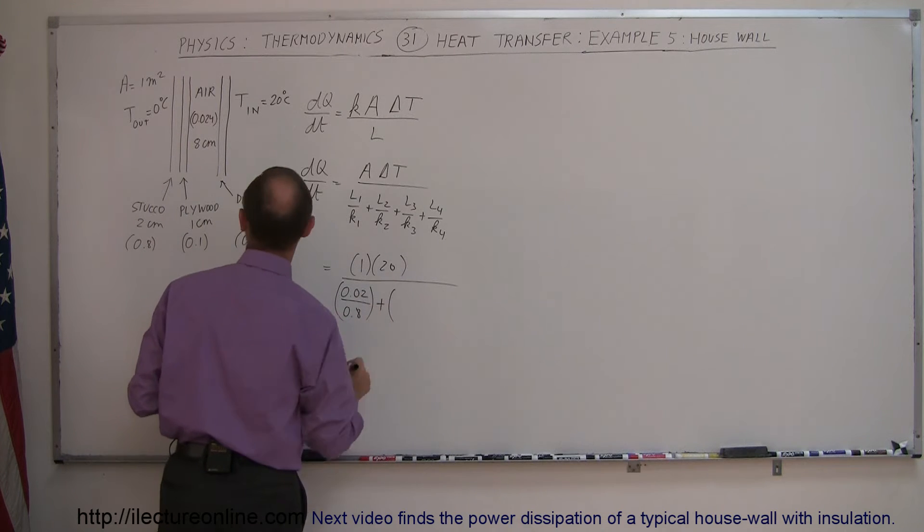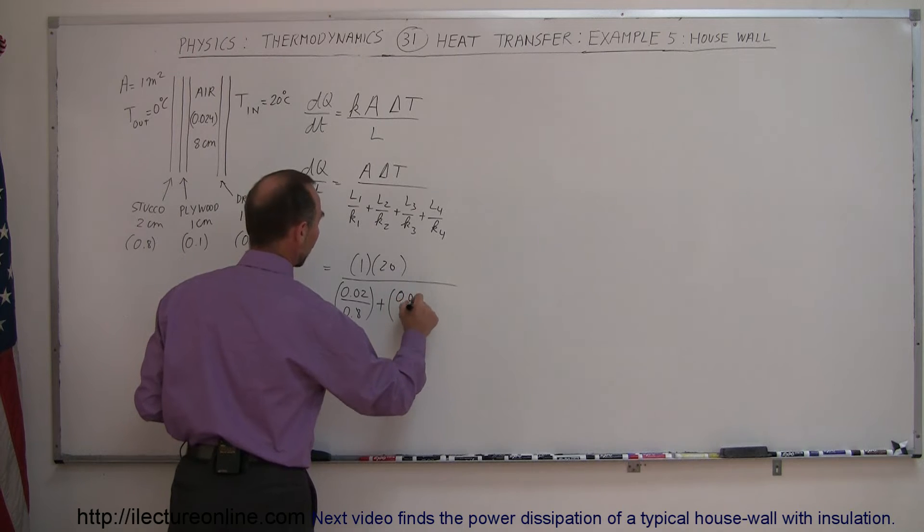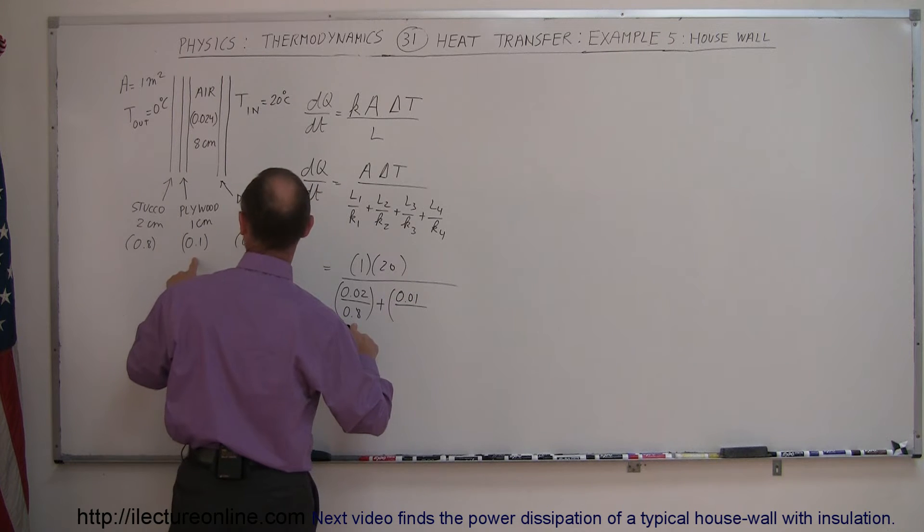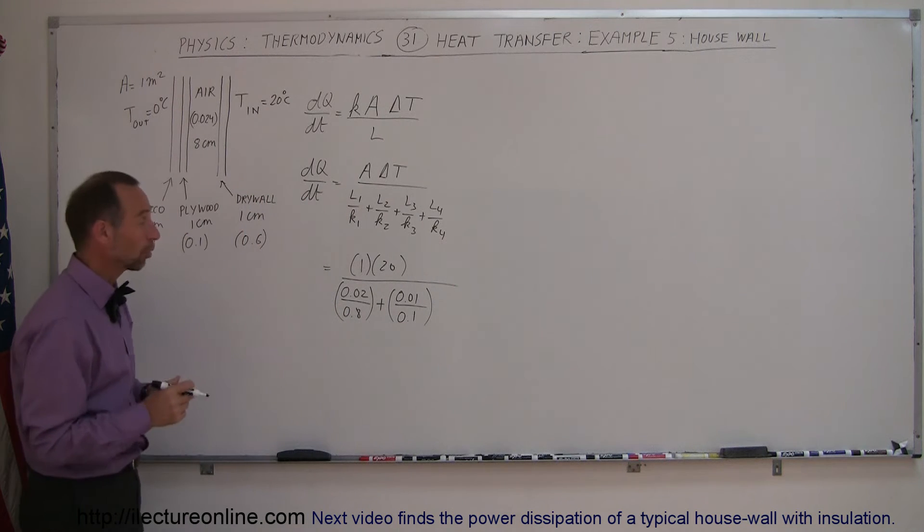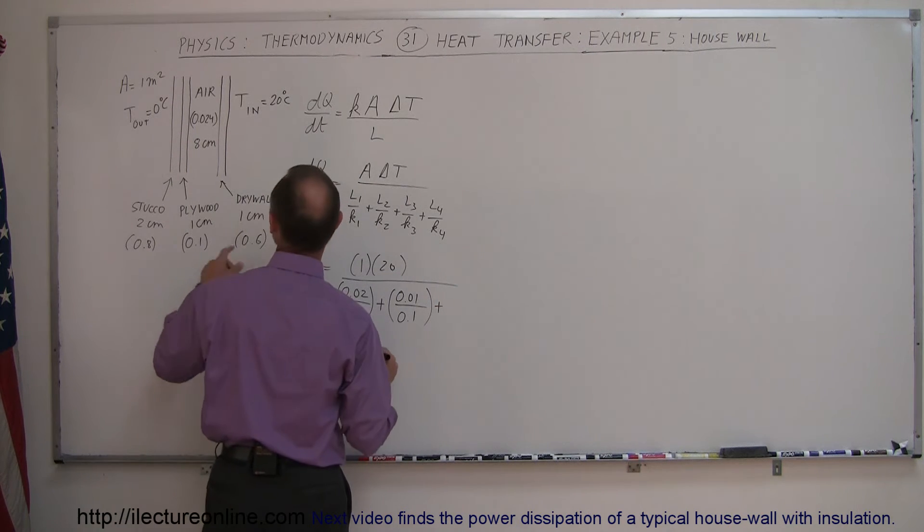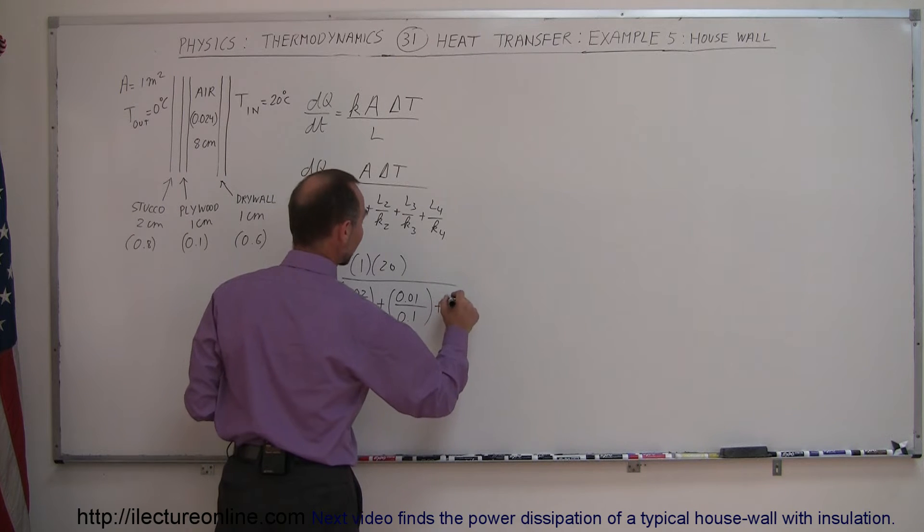Plus the thickness of the plywood, one centimeter, so 0.01 divided by the wood which has a much better insulating capability, so has a much smaller K. Plus L3, that would be the air, about 8 centimeters of air.